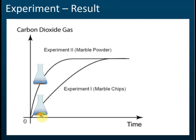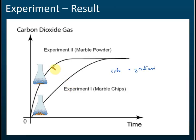Looking at the graph results: experiment one uses marble chips and experiment two uses marble powder. The rate of reaction equals the gradient of the graph. Experiment two has a higher gradient, meaning its rate of reaction is higher.